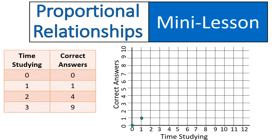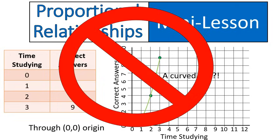Then 1, 1. So if you study for 1 hour, you get 1 correct answer. I guess this is a rough test. Study for 2 hours, you'll get 4 correct answers. And if you study for 3 hours, you'll get 9 correct answers. Now, you notice when we graph this that it's a curved line. This is not a straight line. It does pass through the origin, but it's not a straight line, which means it is not a proportional relationship.